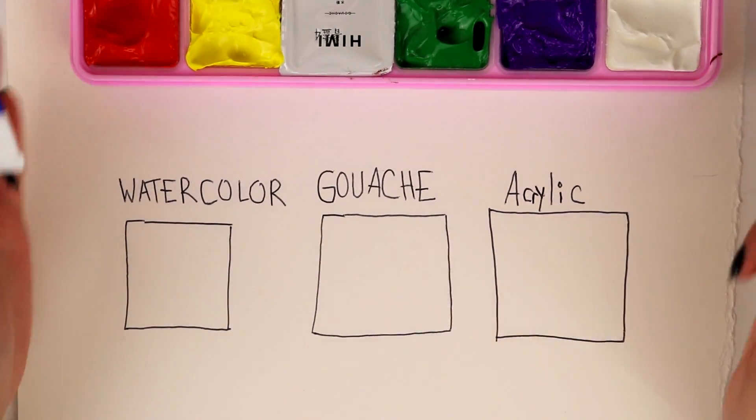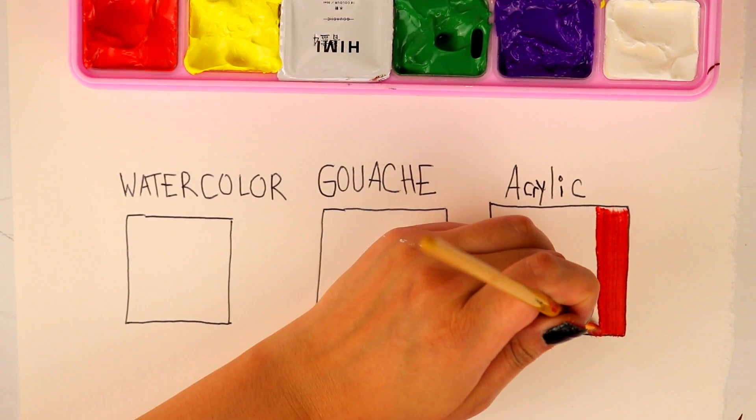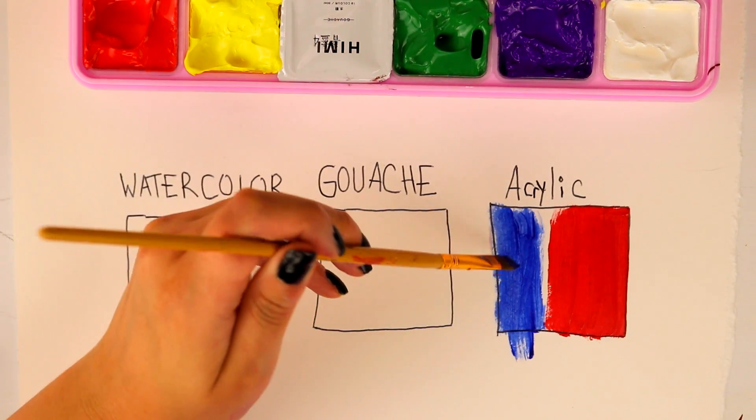So like I said earlier in the video, gouache is like a perfect mix between acrylic paint and watercolor. First, we'll test out acrylic. We'll see how it blends.